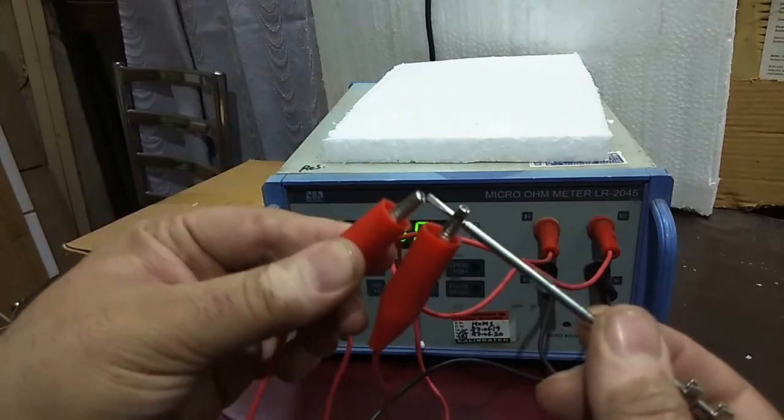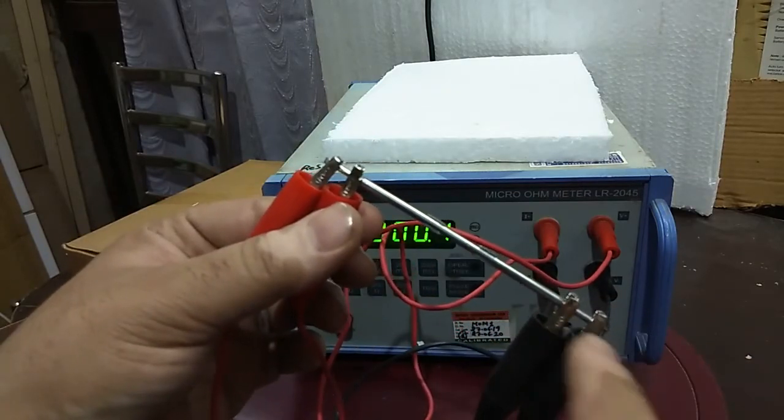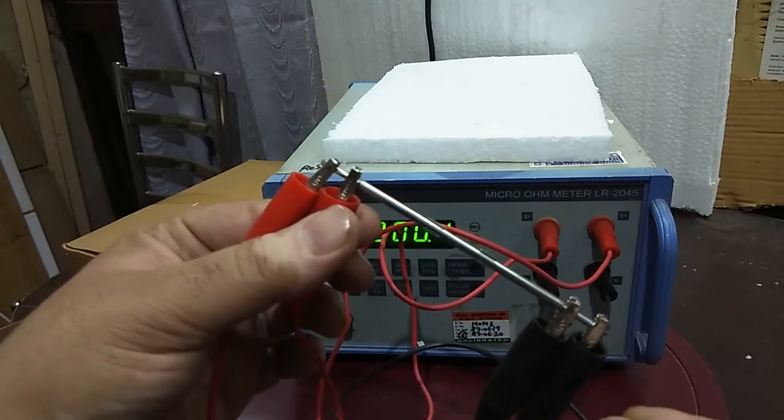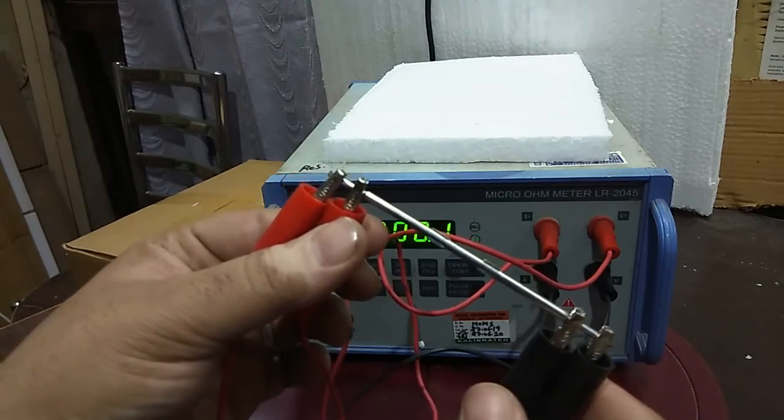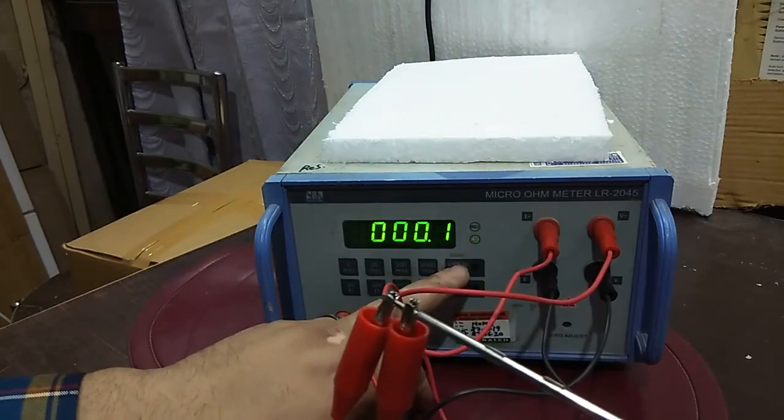Always see that you don't have to short both the points. You have to keep the points like this. There will be some distance between the two points and the results will be fine then. Let's start with the instrument.